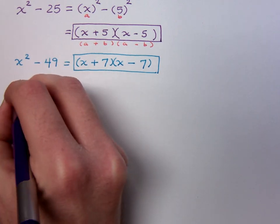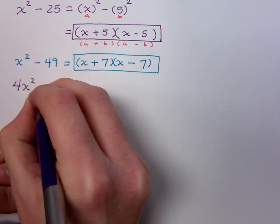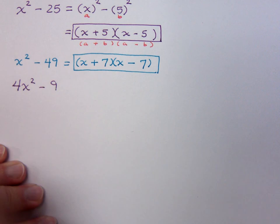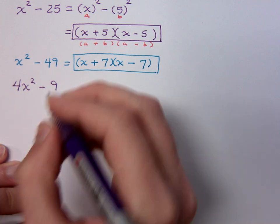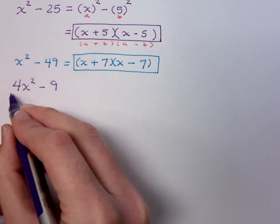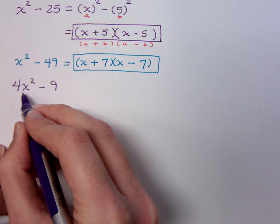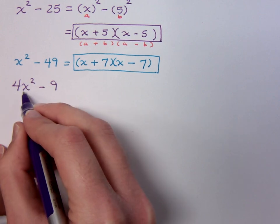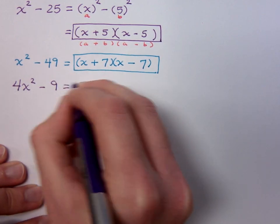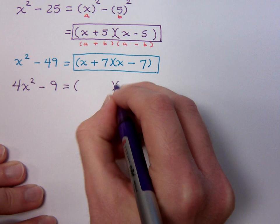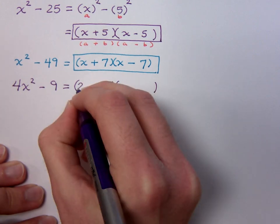Well, what if I change it up a little bit and I say 4x² - 9. We know that 9 is a square, but what about this guy? Well, 4 is a square and so is x². In fact, 4x² is the square of 2x.